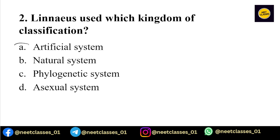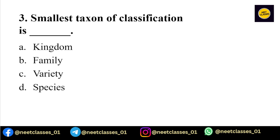That system was artificial. The next question is: what is the smallest taxon of classification? The options are kingdom, family, variety, or species. We covered this in the first chapter. The answer is species — it is the smallest classification unit.